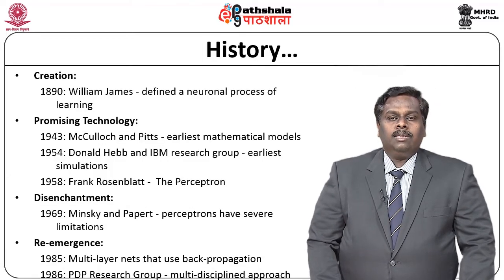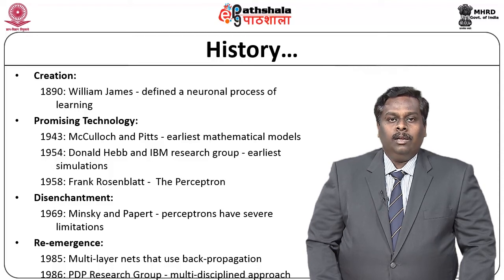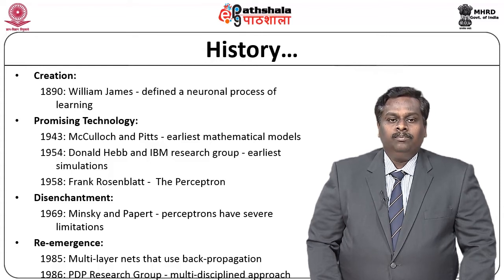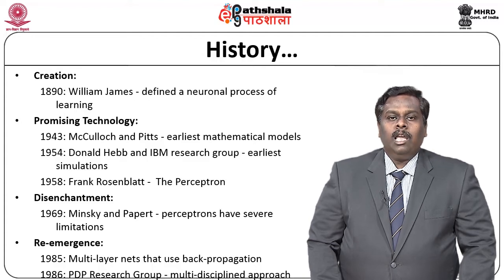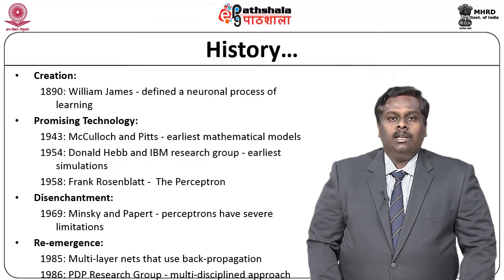When we talk about the history in more detail: in the 1890s, William James was the first person who defined a neuronal process of learning. Then in 1943, 1954, and 1958 there were significant outcomes coming out of neural network research. McCulloch and Pitts came up with the earliest simulation for neural networks, and Frank Rosenblatt came up with the concept of the perceptron, which is very actively used in the neural network domain.